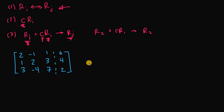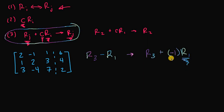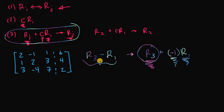Let's do our last example. We're going to perform the row operation r3 minus r1, which is equivalent to r3 plus negative one times r1 — using rule three, multiplying a row by the non-zero constant negative one and adding it to row three to get the new row three. So r3 is 3, -4, 7, 2 and we subtract row one, which is 2, -1, 1, 6.